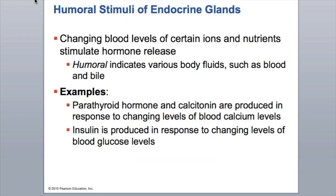Your humoral stimulus involves changing blood levels of certain ions or nutrients stimulating hormone release. Humoral refers to the humors of the body — the various body fluids such as blood and bile. The example is the parathyroid hormone and calcitonin being released in response to changing blood calcium levels. Insulin is another example of this.